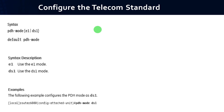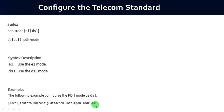If you want to configure the telecom standard, follow the syntax: pdh-mode e1/t1, where e1 is E1 mode and t1 is T1 mode. Example: pdh-mode t1 to set PDH mode as T1. If you want to set it as E1, modify the command accordingly to e1.